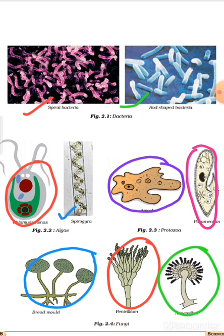The next type shown in figure 2.4 is fungi, which is called kabak. The first picture is bread mold (rai jopas kabak), the second is Penicillium, and the third is Aspergillus. These three are types of fungi.